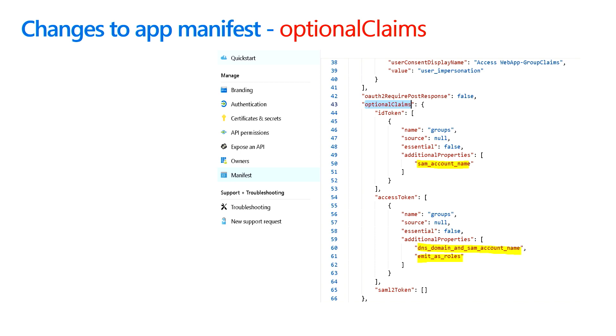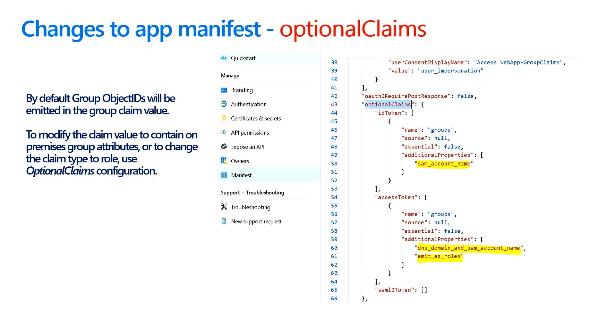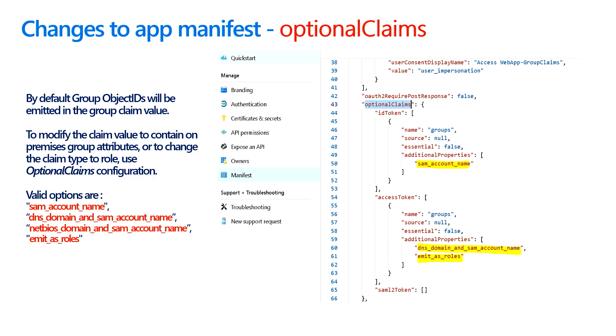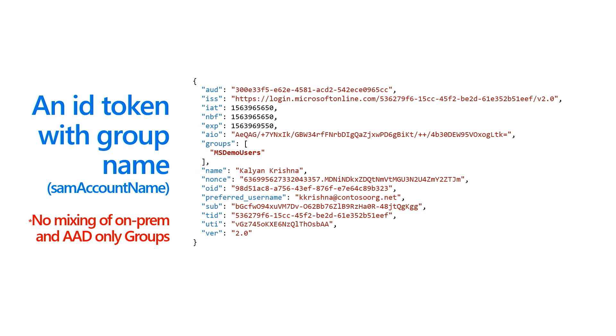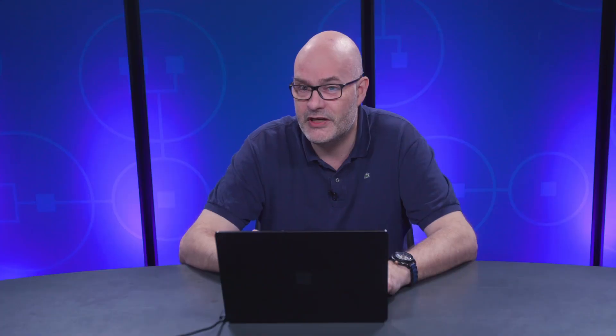You can also change the tokens to add more optional claims — for example, a SAM account name, or the DNS domain and SAM account name emitted as a role. By default we only have the object IDs of the group as a claim. The valid options are: DNS domain and SAM account name, NetBIOS domain and SAM account name, and emit as roles. This only works for groups which are synced from on-premises — that's something to be aware of. We get a lot of questions about wanting group names instead of group IDs, and that only works for groups being synced from an on-premises Active Directory. We don't mix AAD groups and on-prem groups, so it is either one or the other.